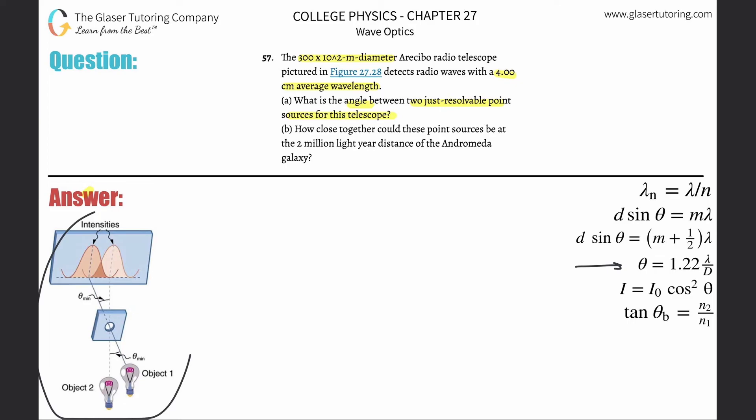All right, so we need to understand the Rayleigh criterion and the formula. Here is a picture, and basically these are the two point sources. They are located some particular distance away.